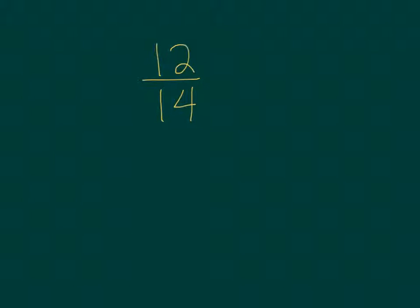If we take a look at 12 over 14, you want to figure out what number can both numbers be divisible by. To do that, you want to list the factors of each number. The factors of 12 would be 1, 2, 3, 4, 6, and 12. And the factors of 14 would be 1, 2, 7, and 14.